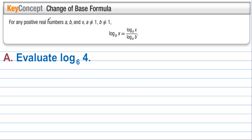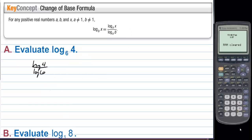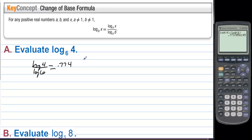Change of base formula: for any positive real numbers a, b, and x where a ≠ 1 and b ≠ 1, log base b of x equals log base a of x divided by log base a of b. For example, log base 6 of 4 can be changed to common log: log 4 divided by log 6. Using a calculator, that's approximately 0.774. We can also use natural log — ln 4 divided by ln 6 — and we get the same answer, 0.774. It doesn't matter what base you pick; we just choose bases our calculator can handle.